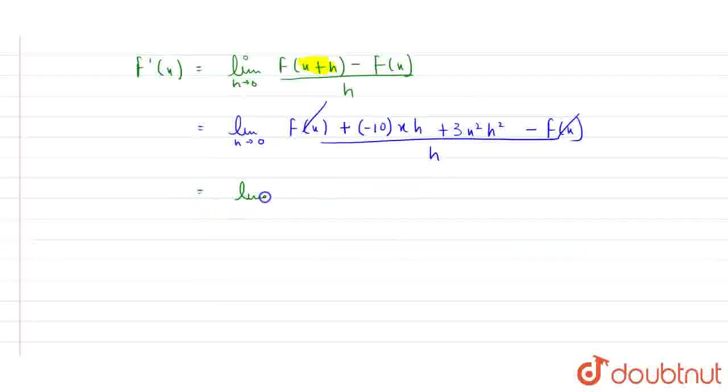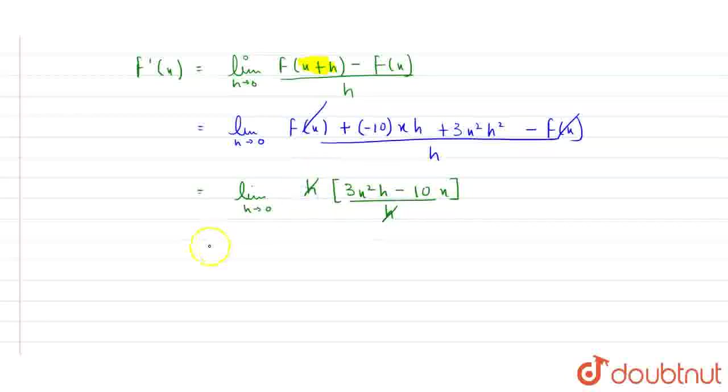In the next step, limit h tends to 0, here I'll have, if I'll take h common from remaining terms, I'll get 3 x square h minus 10 x, divide by h. h and h are cancelling, limit h tends to 0, here I'll have 3 x square h minus 10 x. So let's put this limit, h tends to 0, so I'll get here 3 x square 0 minus 10 x.